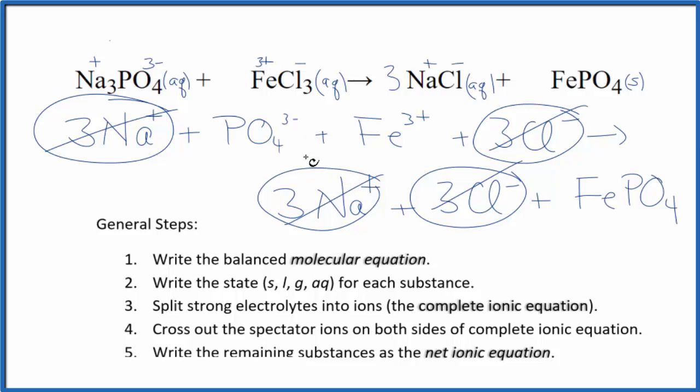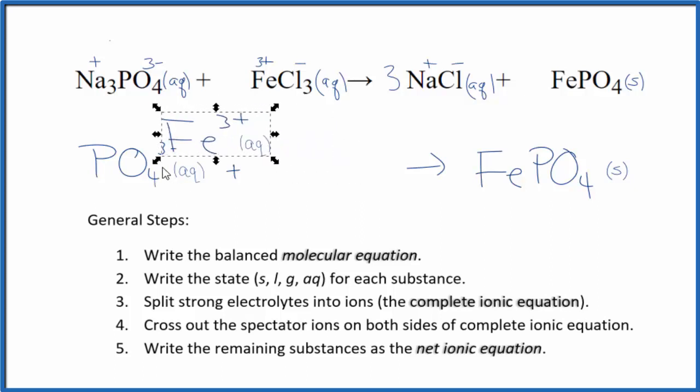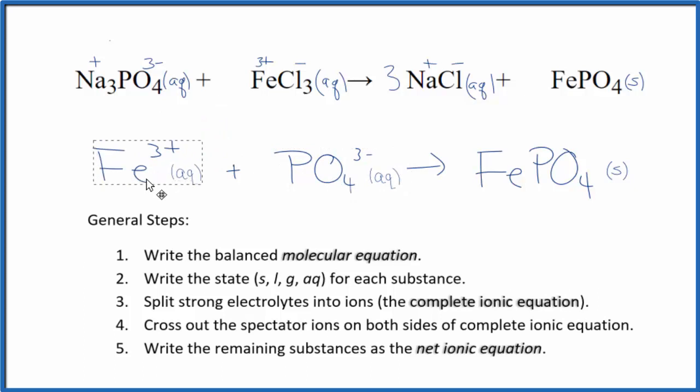I'll clean this up, write the states in. We'll have our net ionic equation. So this is the balanced net ionic equation for Na3PO4 plus FeCl3. Sometimes you'll see the positive ion put first. It doesn't really matter, it's the same thing. Maybe it looks a little nicer.